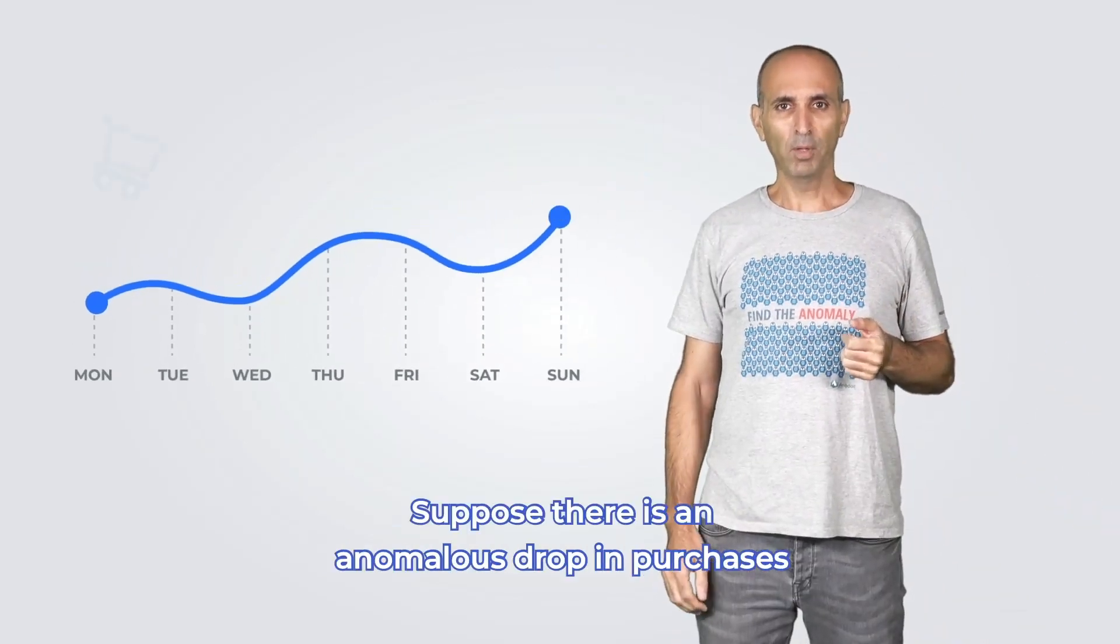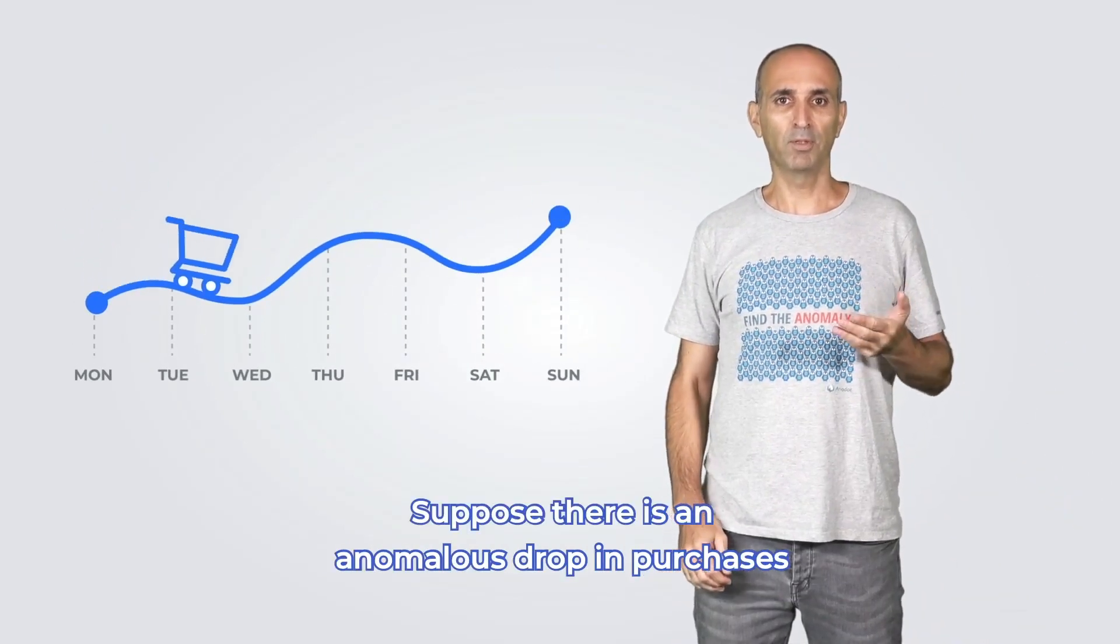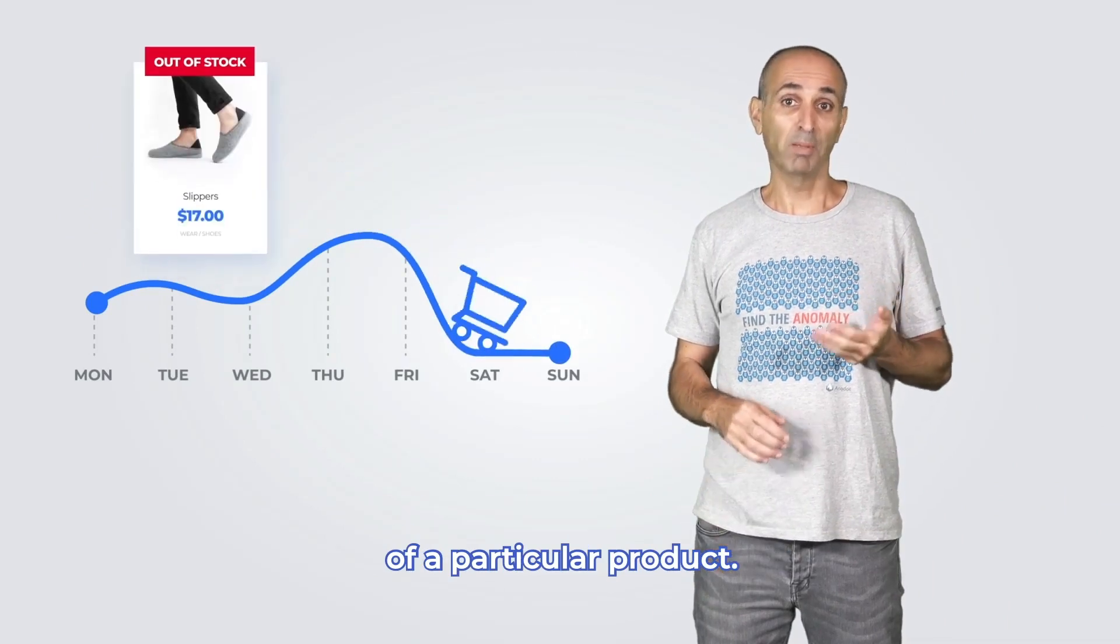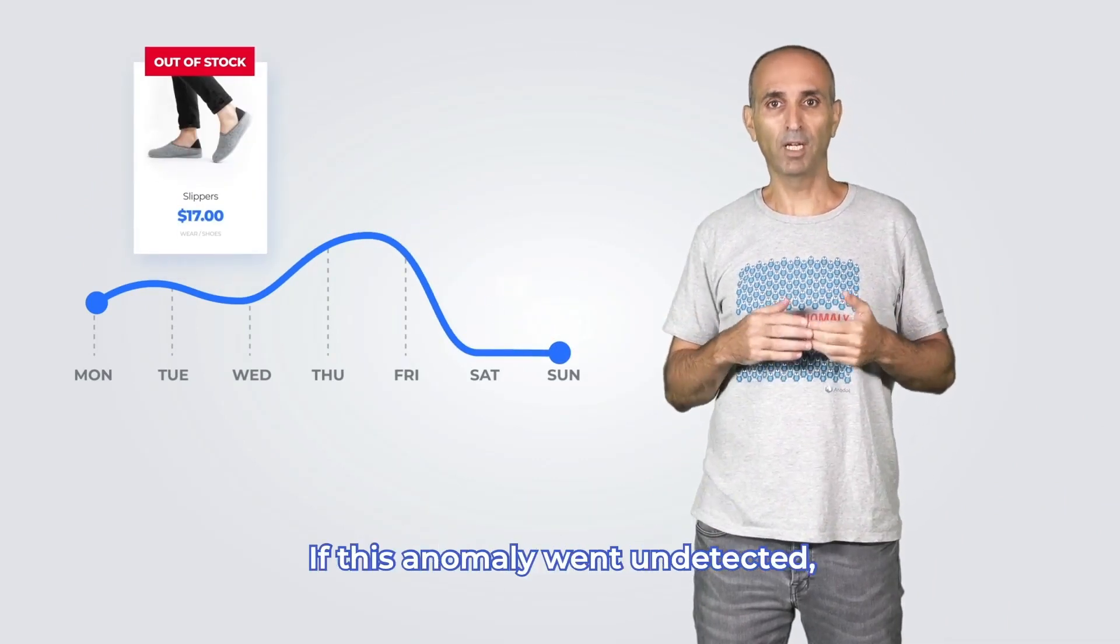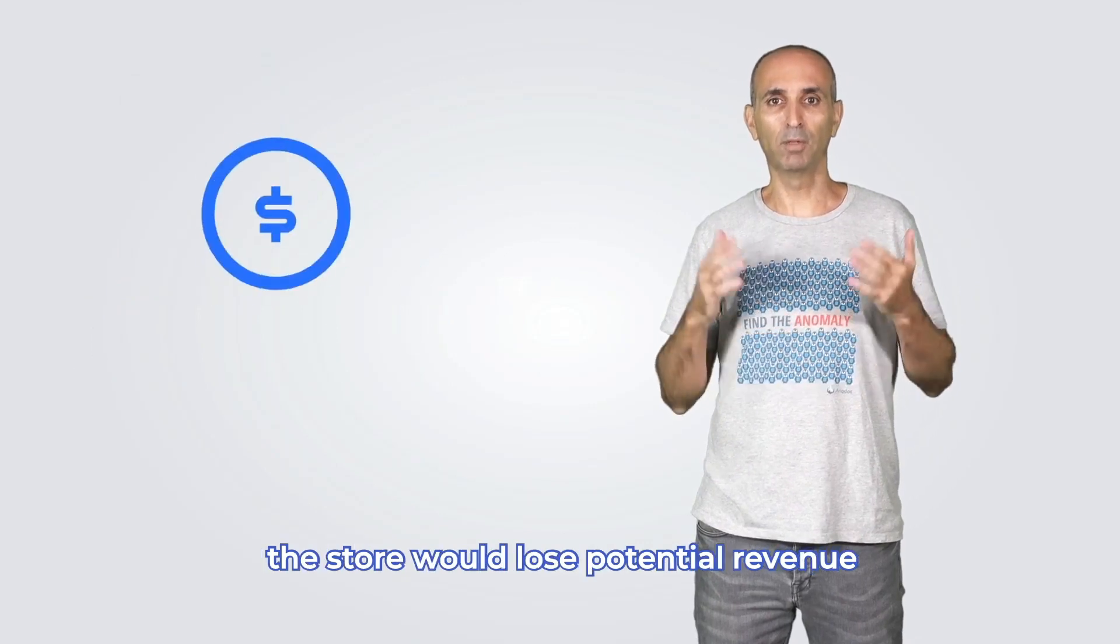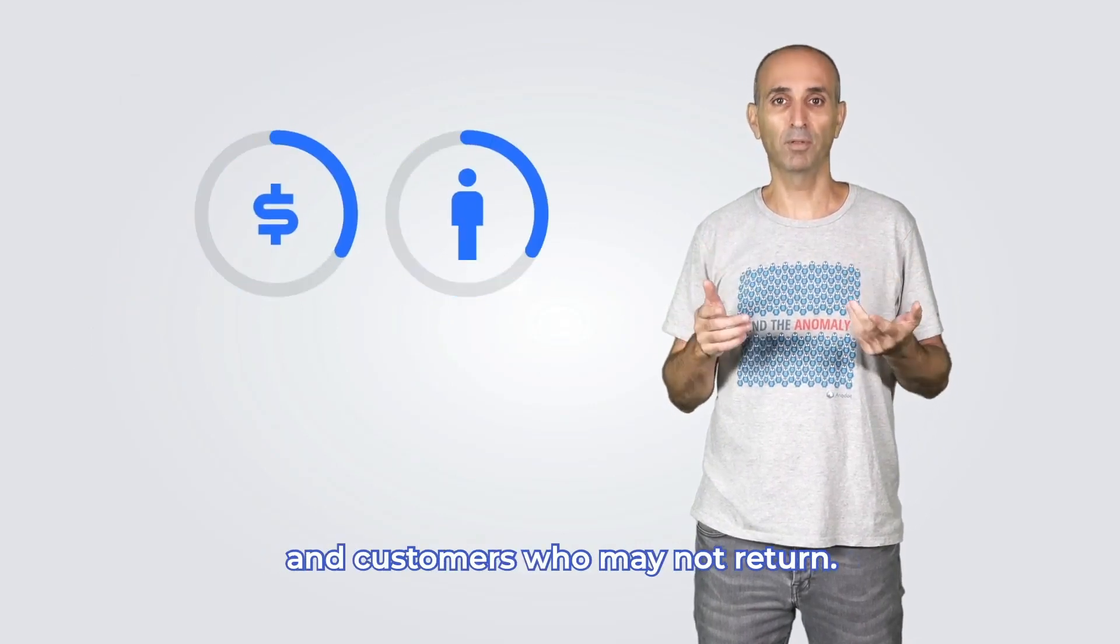Let's take an online store. Suppose there is an anomalous drop in purchases of a particular product. Maybe they ran out of stock of that product. If this anomaly went undetected, the store would lose potential revenue and customers who may not return.